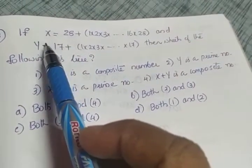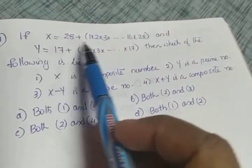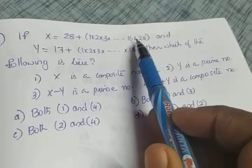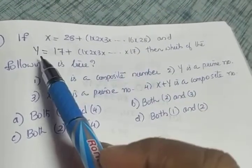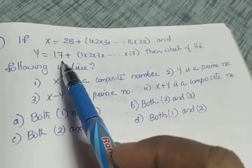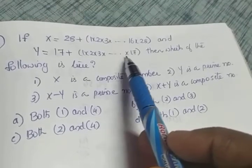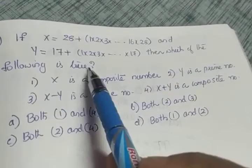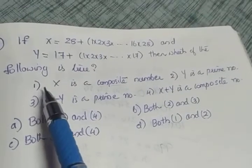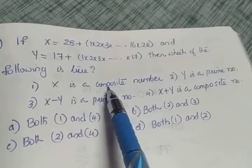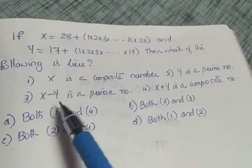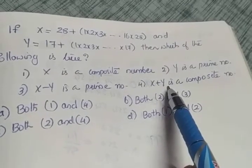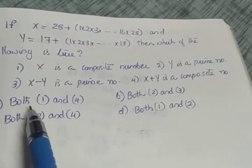The next question: if x equals 28 plus 1×2×3×...×16×28, and y equals 17 plus 1×2×3×...×17, which of the following is true? The four statements are: (1) x is a composite number, (2) y is a prime number, (3) x minus y is a prime number, (4) x plus y is a composite number.